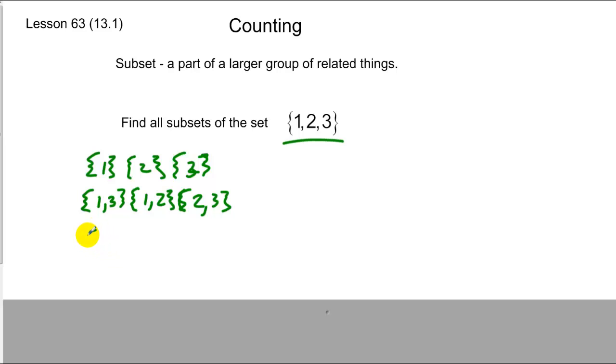And 3-term subsets, which is the entire set itself. And then there's another subset that has to be represented, and it's represented in every subset of every set. It's called the null set, where there's none of those terms in the set.